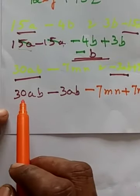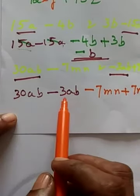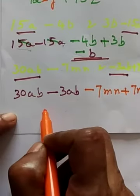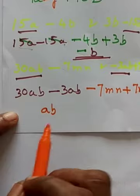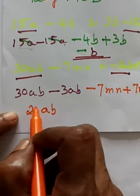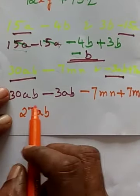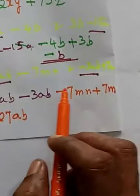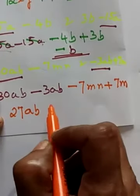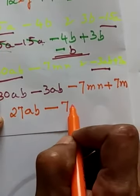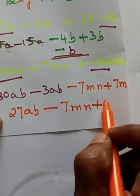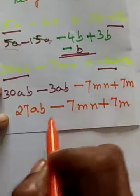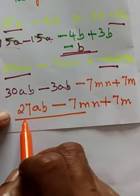Here bigger number is 30. We have to subtract, unlike signs. So we have to worry about it. 30 minus 3, that is 27ab. Here we have to write it as it is because they are unlike terms. This is the answer.